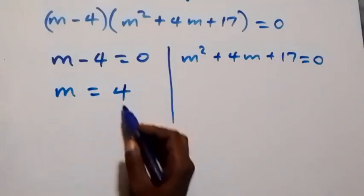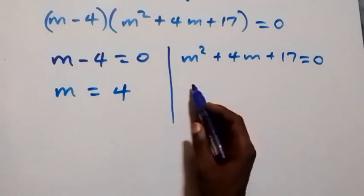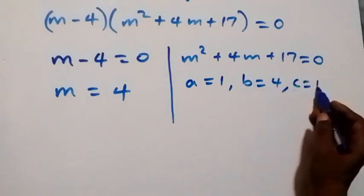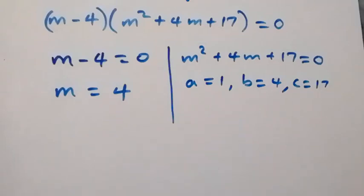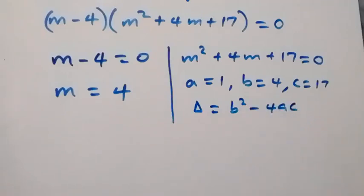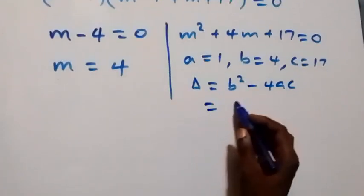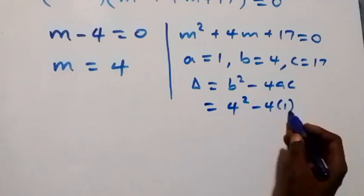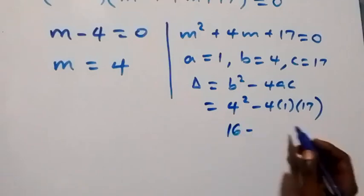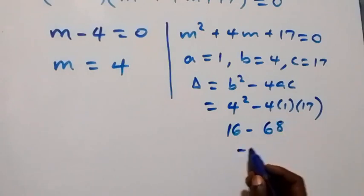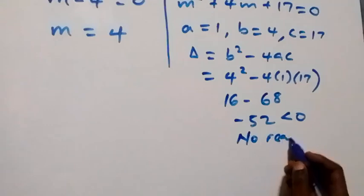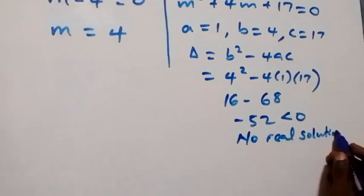For m² + 4m + 17 = 0, we check the discriminant with a = 1, b = 4, and c = 17. The discriminant is b² − 4ac = 4² − 4(1)(17) = 16 − 68 = −52, which is less than 0. Since the discriminant is negative, this equation has no real solution.